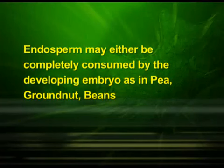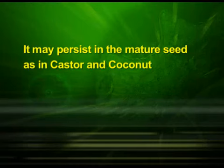Endosperm may either be completely consumed by the developing embryo before seed maturation, as found in pea, groundnut, beans, etc., or it may persist in the mature seeds as found in castor and coconut, and be used up during seed germination.